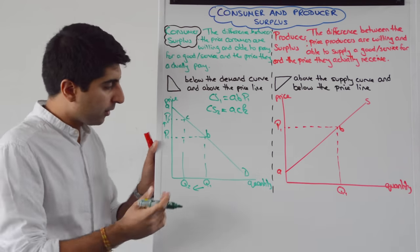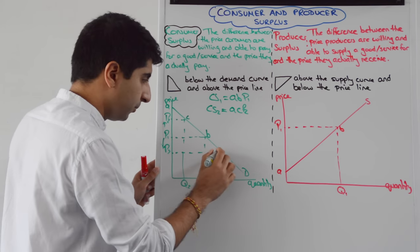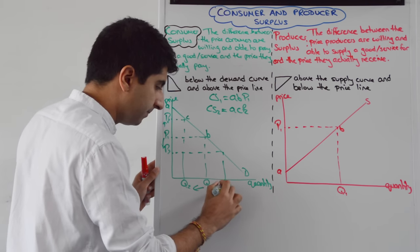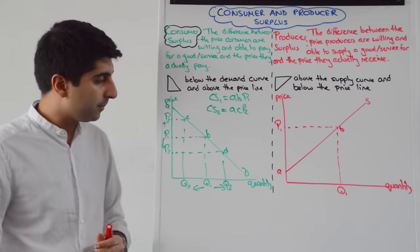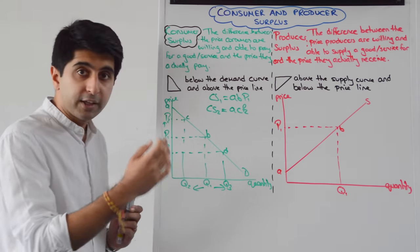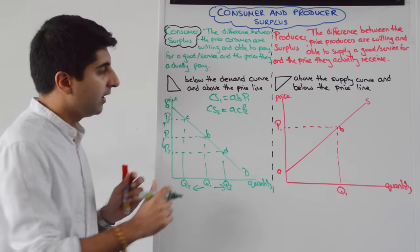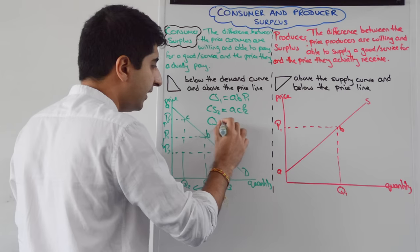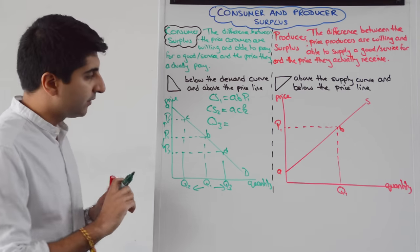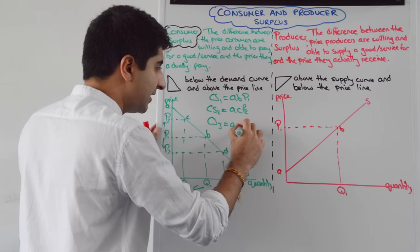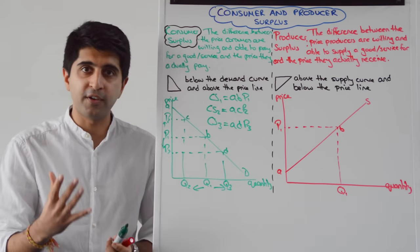Whereas if we drop the price to P3, we can see there is more quantity at Q3. Consumer surplus has increased compared to P1, as you'd expect. Exactly the same way — the area beneath the demand curve above the price line gives us an area of A, D, P3. So that's how we work out consumer surplus. Very simple stuff.